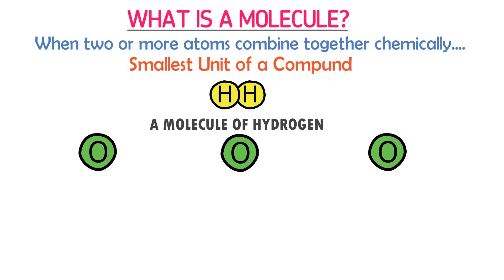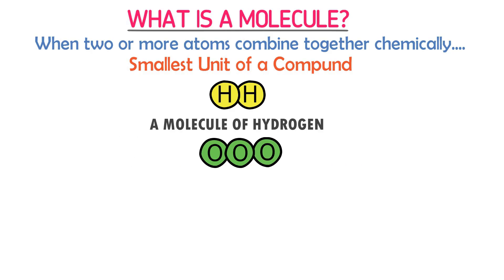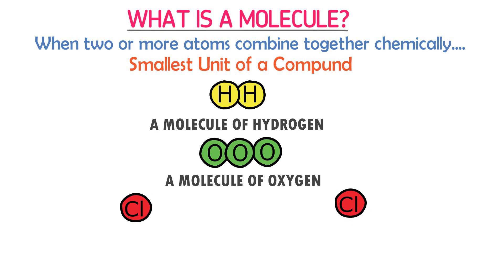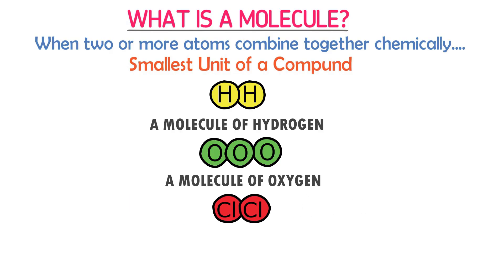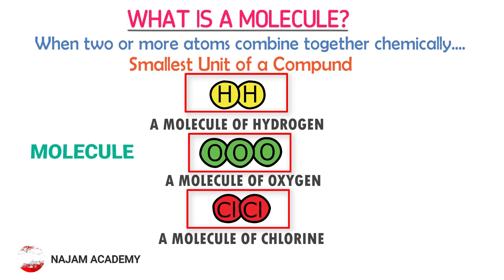Consider three oxygen atoms. When all these three atoms come together and join chemically, we call this a molecule of ozone. Consider two chlorine atoms. When these two atoms of chlorine come together and join chemically, we call this a molecule of chlorine. Thus, from these examples, we learn that when two or more atoms combine together chemically, we get a molecule.